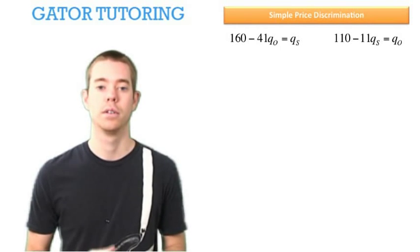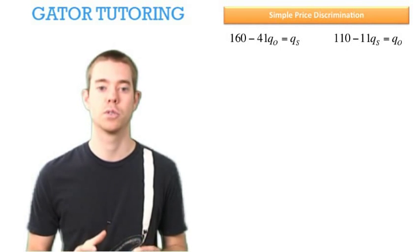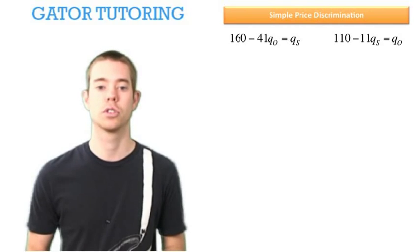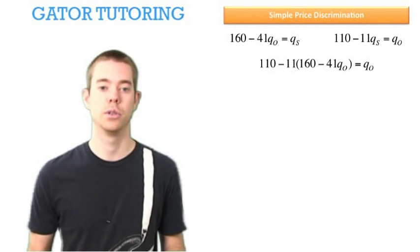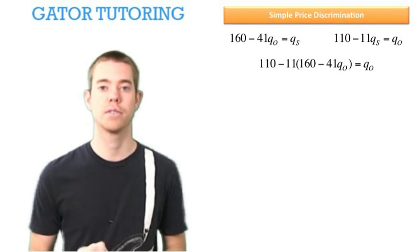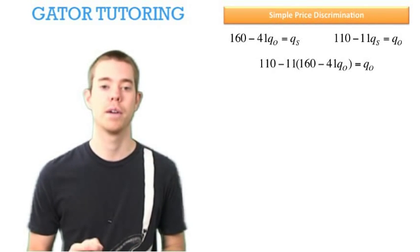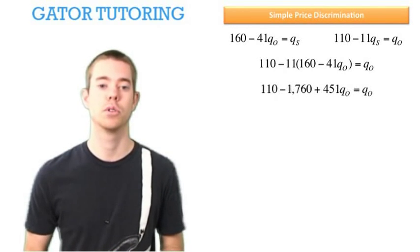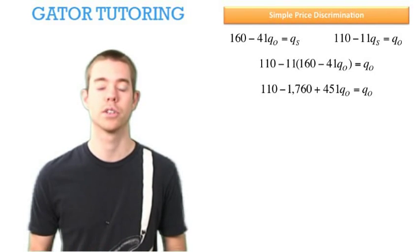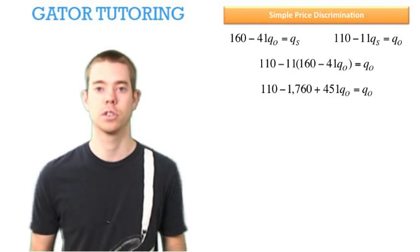Now that we have both derivatives solved, we can use substitution. QO = 110 - 11QS, but instead of QS, I'm going to plug in my function for QS in terms of QO. We distribute through that 11 and simplify. Now we only have QO as our variable, so we can successfully solve for QO.